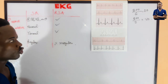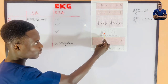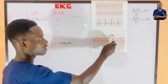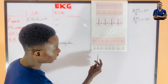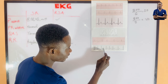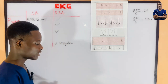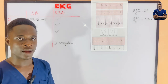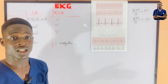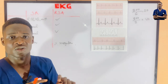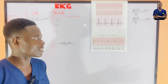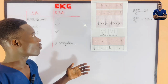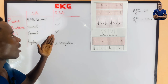In respiratory sinus arrhythmia there is a small portion which is fast, then slow, then fast, then slow again — giving the form of respiration. So as you inhale, there is an increase in heart rate; as you exhale, there is a decrease in heart rate. This gives you that idea of respiratory sinus arrhythmia. It is a physiological phenomenon — we consider it a normal condition — and it mostly happens in young people.